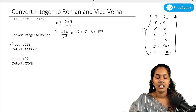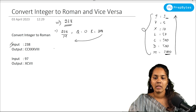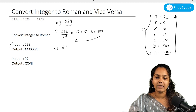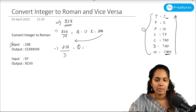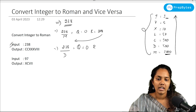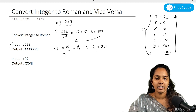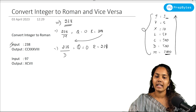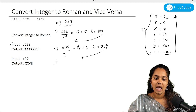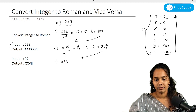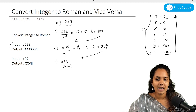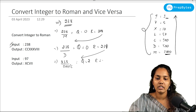I'll take that remainder and divide it by the next symbol D (500), again getting a quotient of 0 and a remainder of 238. Then I'll take this remainder and divide it by 100, which is C. I'll have a quotient of 2 and a remainder of 38.